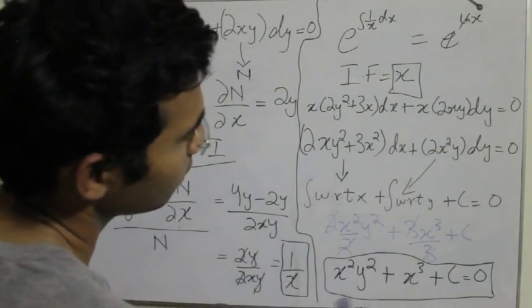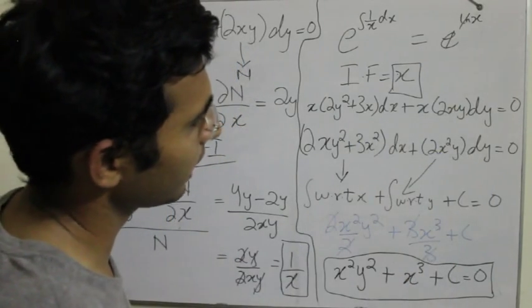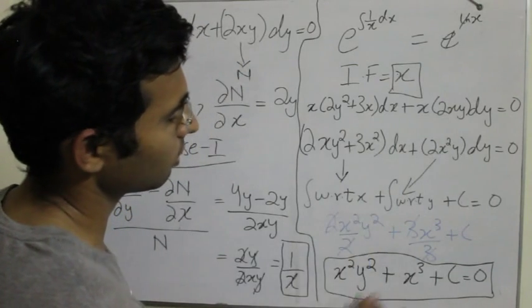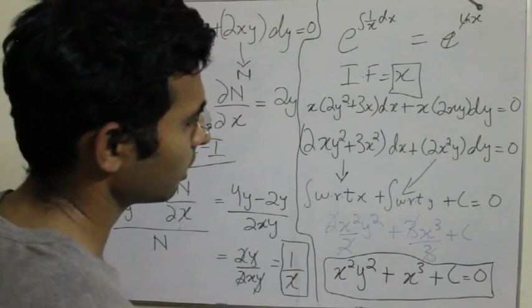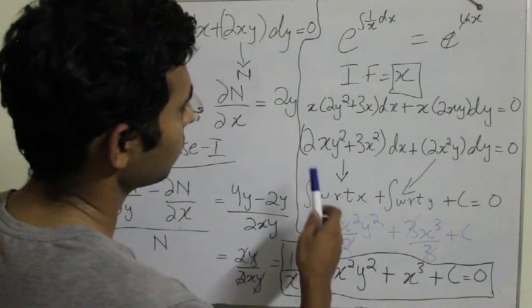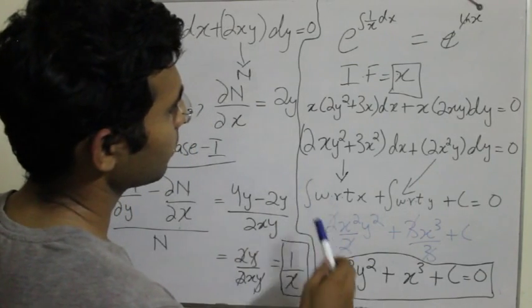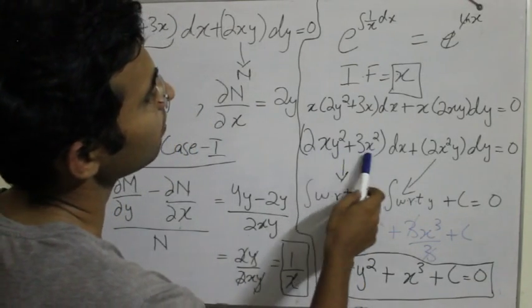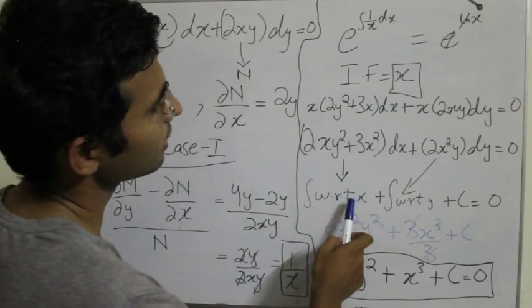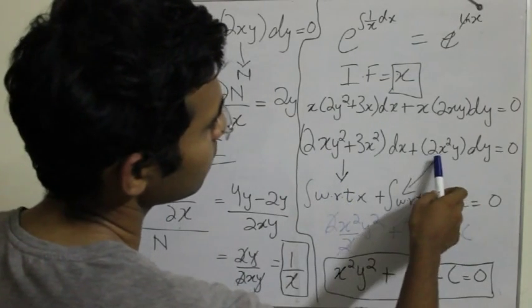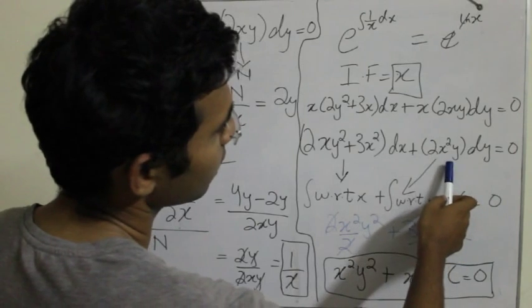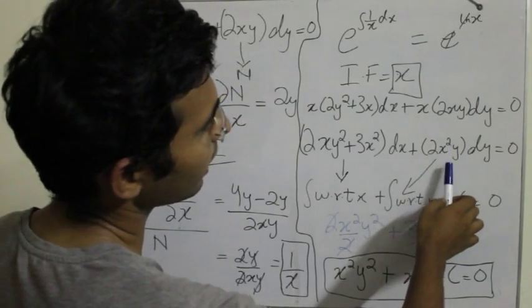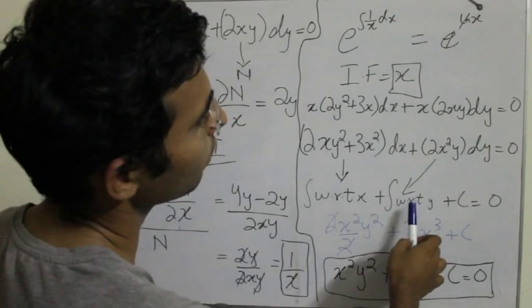Now you can further solve it by following the exact method. But this is a direct method or a shortcut method that I used to find out the answer. You can use it too if you want to. So the shortcut method is to integrate this term M with respect to x and integrate this term, that is with dy, integrate only those terms that has y only with respect to y.